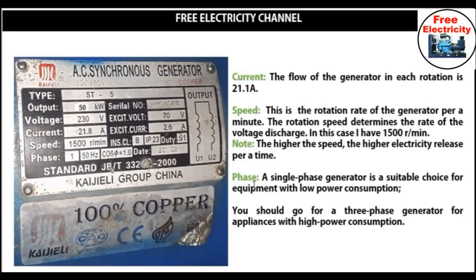The speed ratio is very important because if the speed of the generator is lower than that of the electric motor, then the capacity of the generator will not be fully utilized. Then we will talk about the phase aspect — it has to do with the connection ratio. We have two-phase, three-phase, and one-phase — they are all different, just to do with the connection. When you are going to buy, ask them what is the phase.